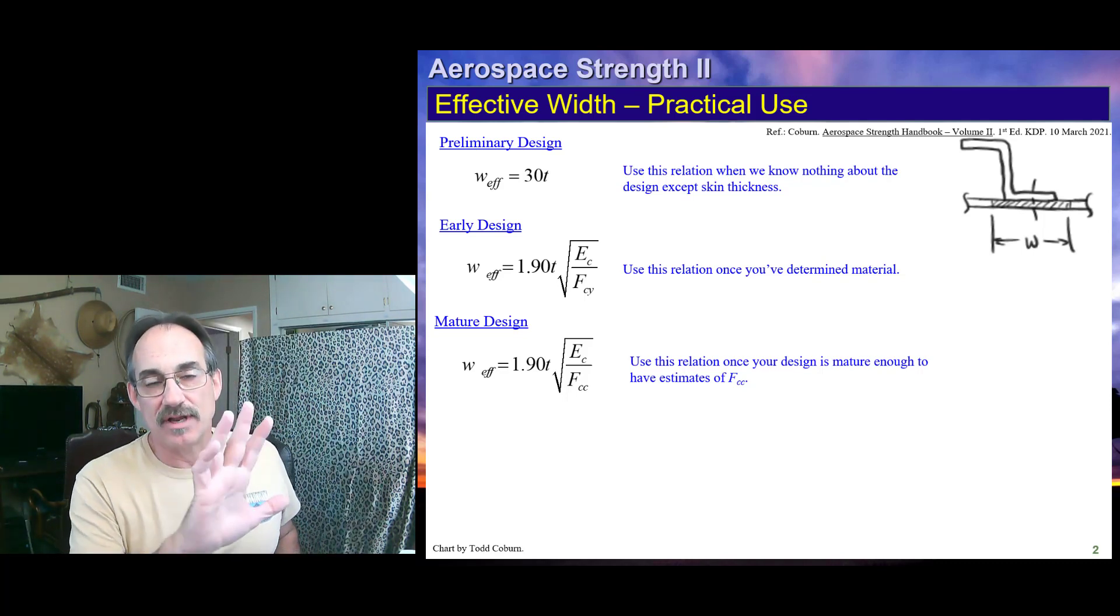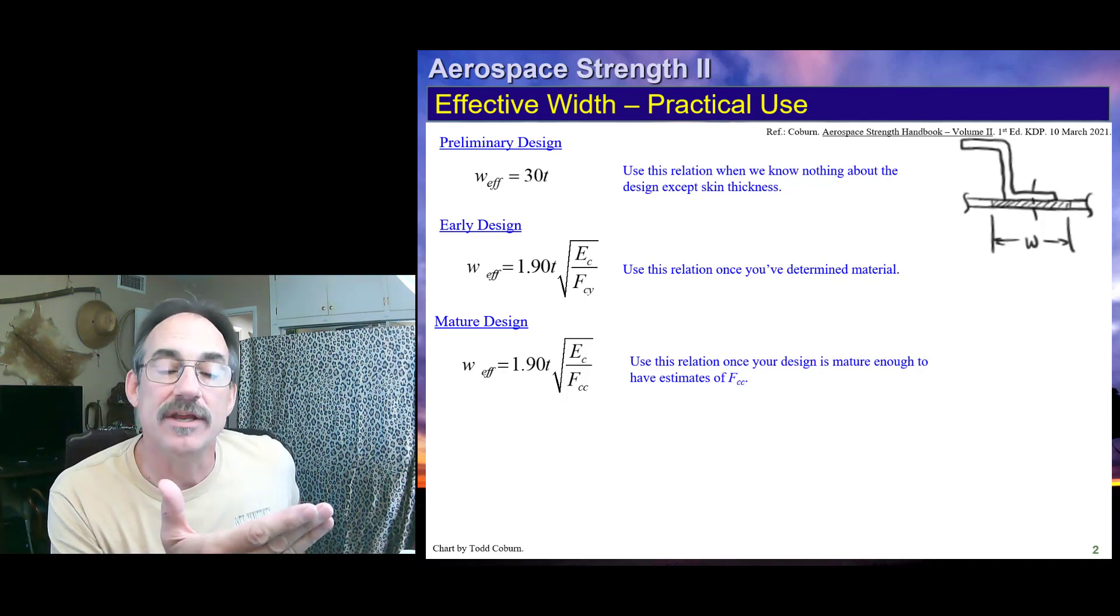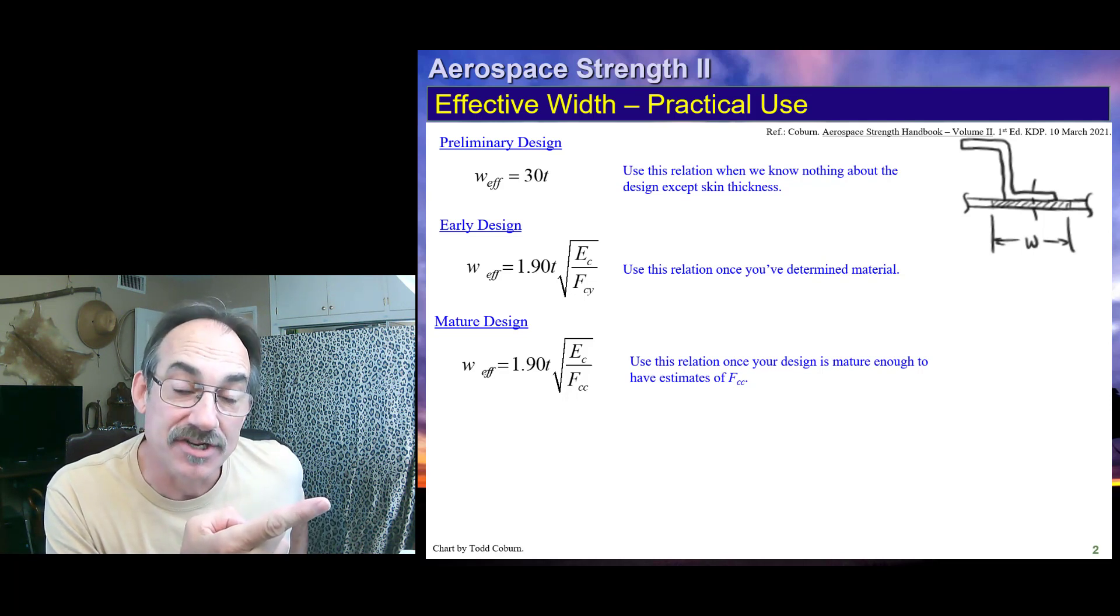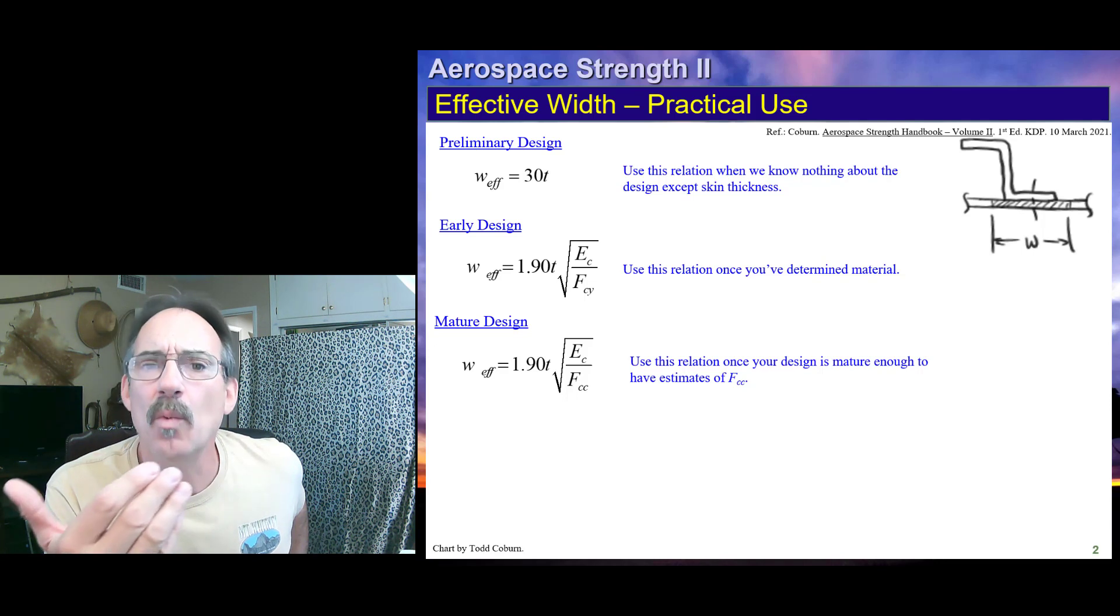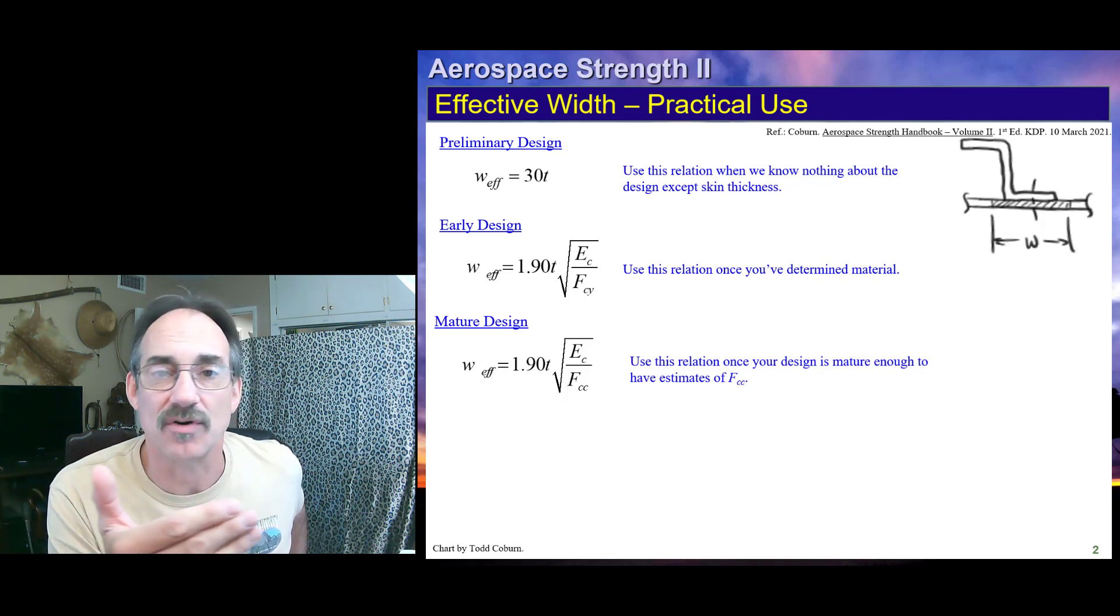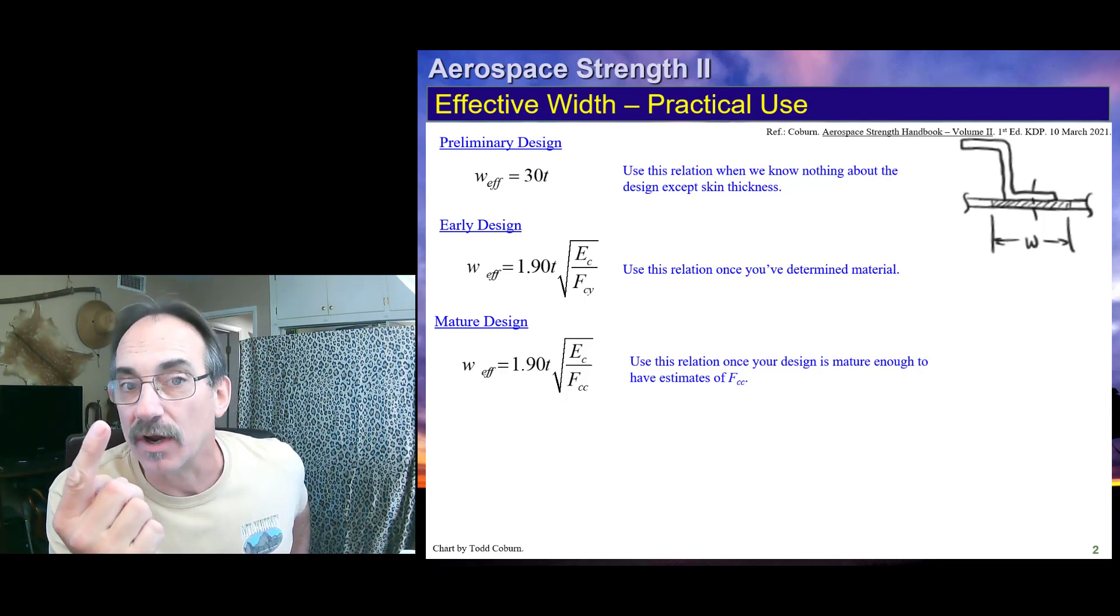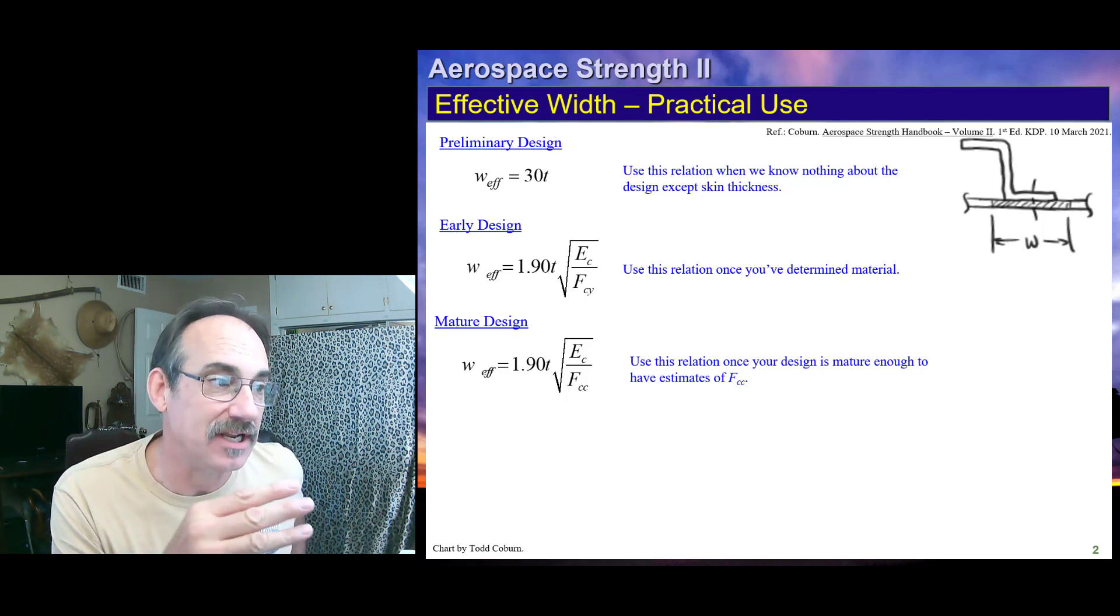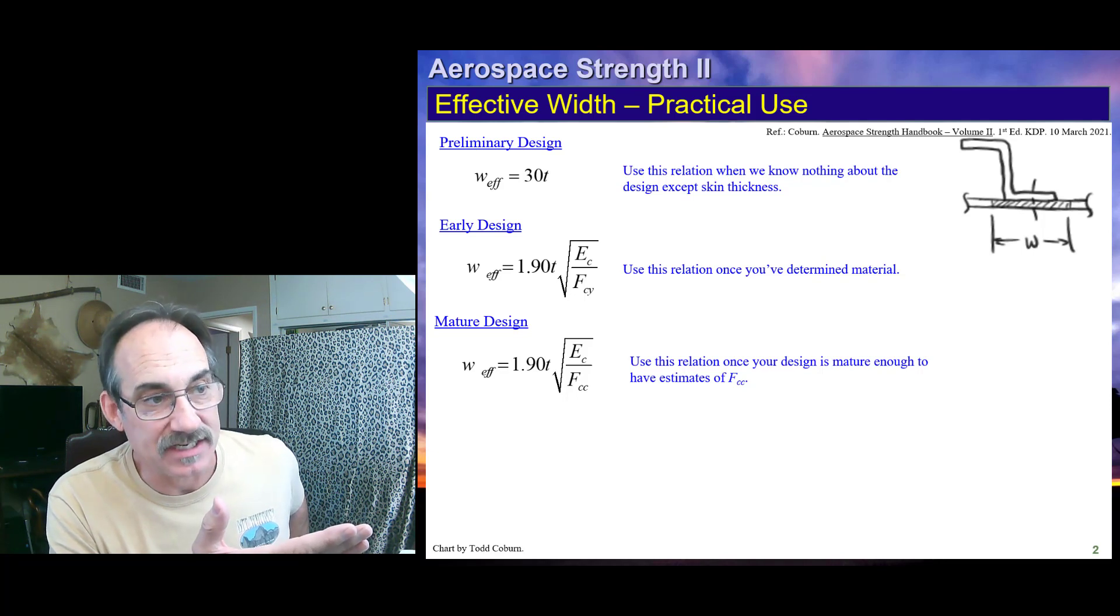So, we use 30T if we're early in the design phase. We only know about skin thickness. We use F_CY in the second equation if we have materials selected, but we may not have done the work to calculate crippling allowables or cross-section dimensions and things. And later on, once we have figured out what stringer we're going to use, what it looks like, how they're attached together, we can use the mature design relation, which uses 1.9T square root of E_C over F_CC.